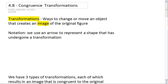Section 4.8, Congruence Transformations. A transformation is ways to change or move an object that creates an image of the original figure. The notation we'll use is an arrow to represent that a shape has undergone a transformation.